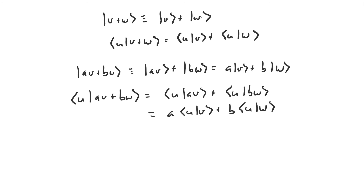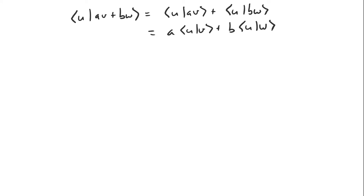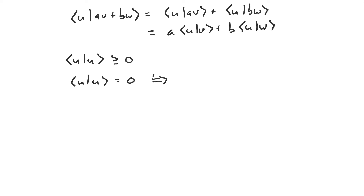The final property of the inner product isn't too important to us but it's pretty straightforward. It just says that the inner product of a vector with itself has to be greater than or equal to zero. And if it happens to be zero, then it means that vector is the zero vector — which is the vector that you get when you multiply any vector by the number zero.